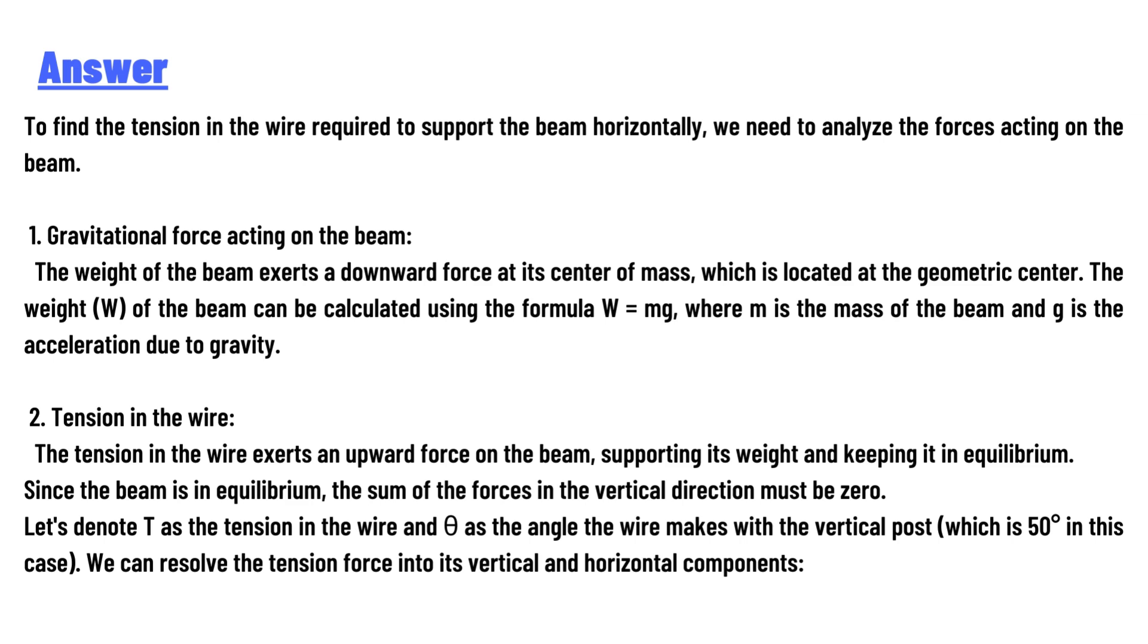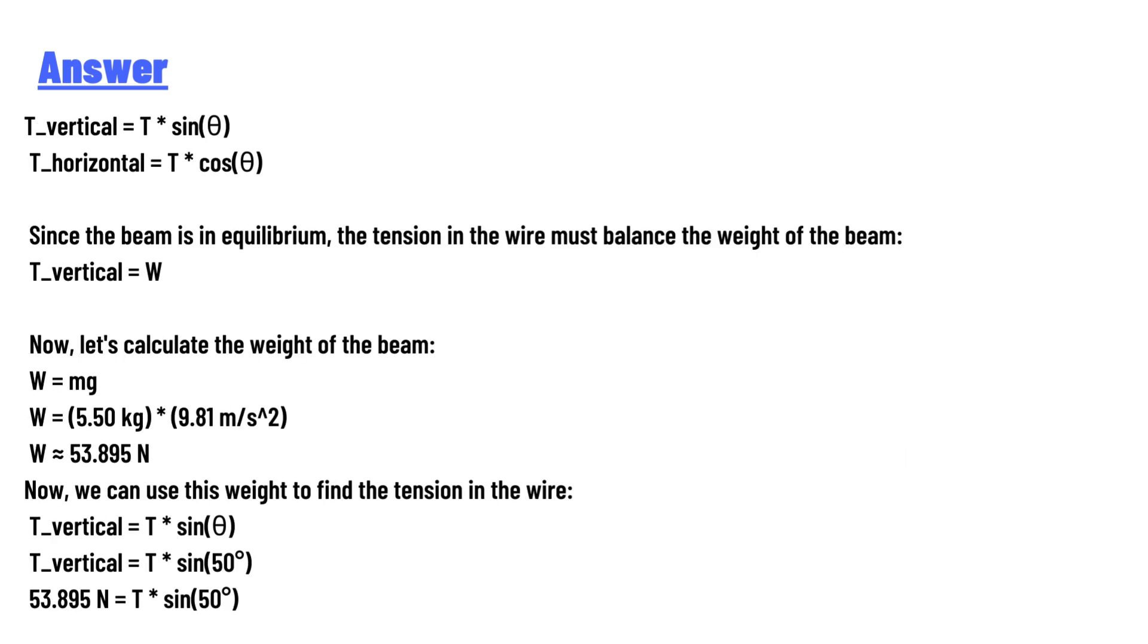We can resolve the tension force into its vertical and horizontal components: T_vertical = T·sin(θ), T_horizontal = T·cos(θ). Since the beam is in equilibrium, the tension in the wire must balance the weight of the beam: T_vertical = W.